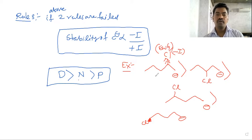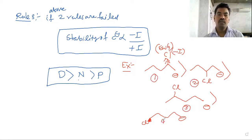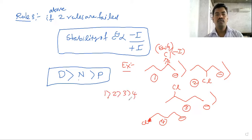So this is the order. The number of minus-I groups: 1 is greater than 2, 2 is greater than 3, 3 is greater than 4. So the order is established based on the number of electron-withdrawing groups present.